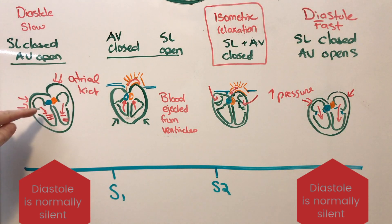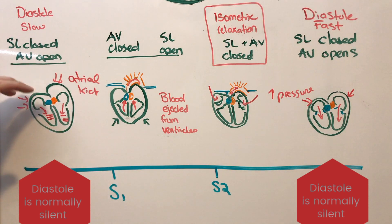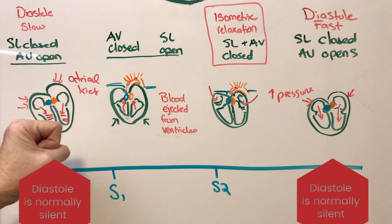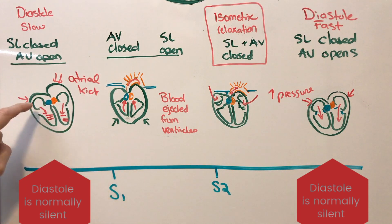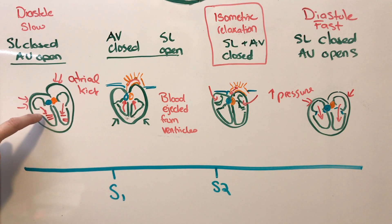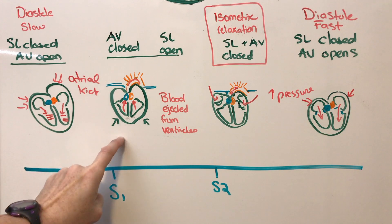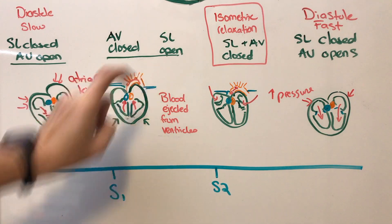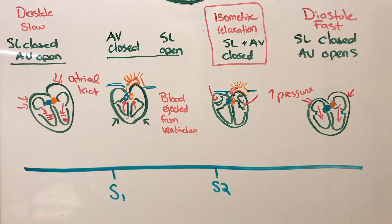Atrial kick is when those atria contract and give one more oomph, so that the last little bit of blood can be squeezed out of the atria into the ventricles, maximizing ventricular contraction so we get the most blood ejected out into the body.